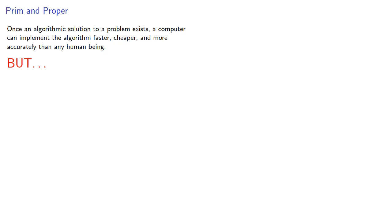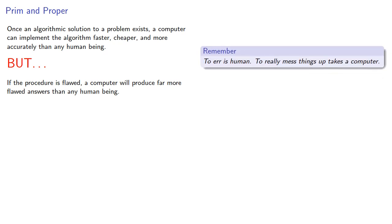But if the procedure is flawed, a computer will produce far more flawed answers than any human being. Remember, to err is human, to really mess things up takes a computer. So, it is increasingly important to prove the validity of algorithms.